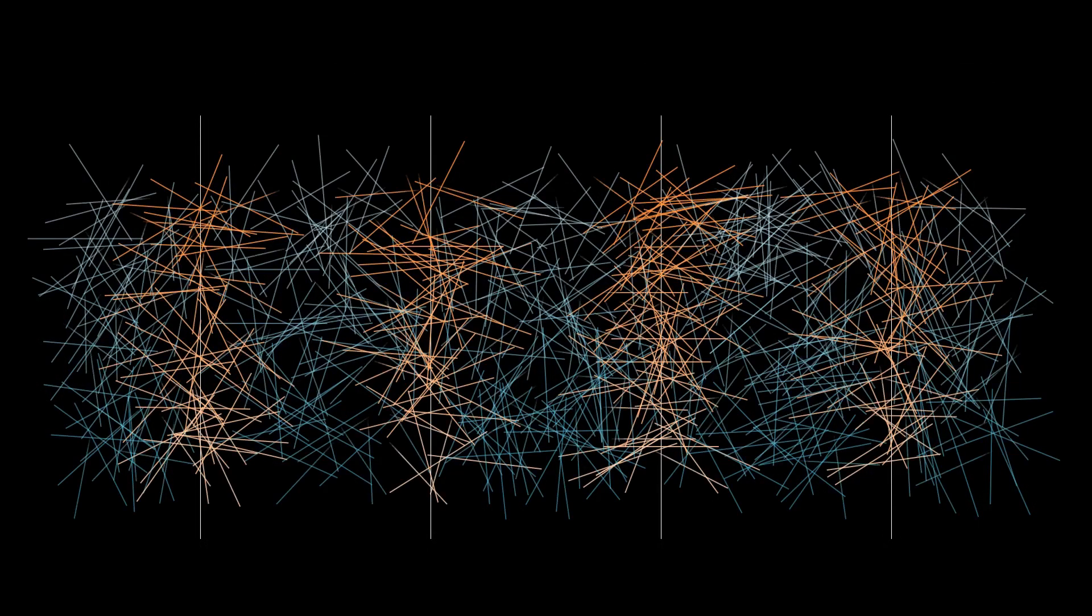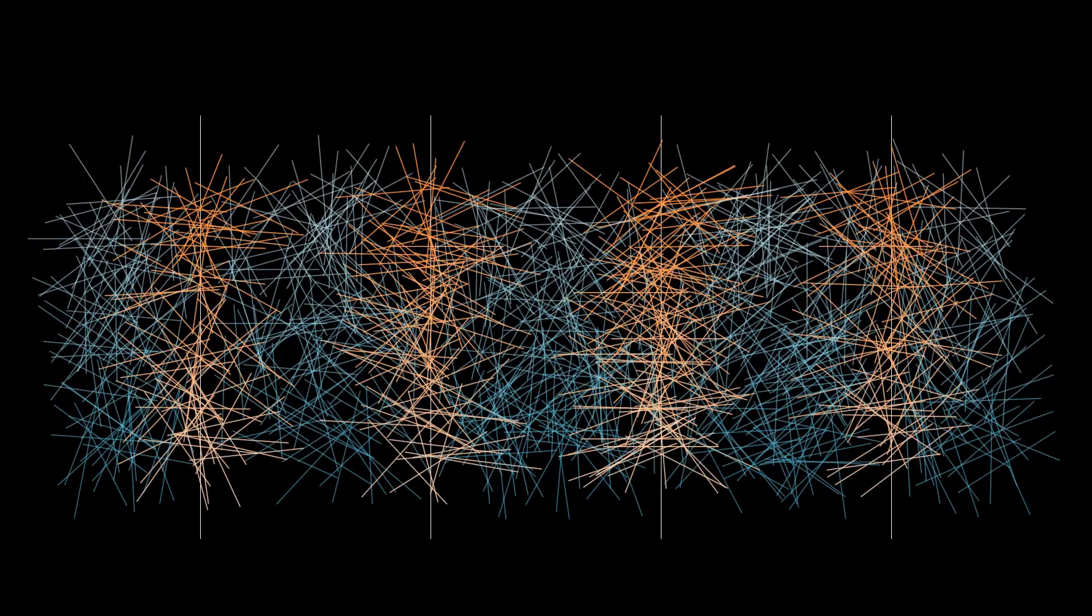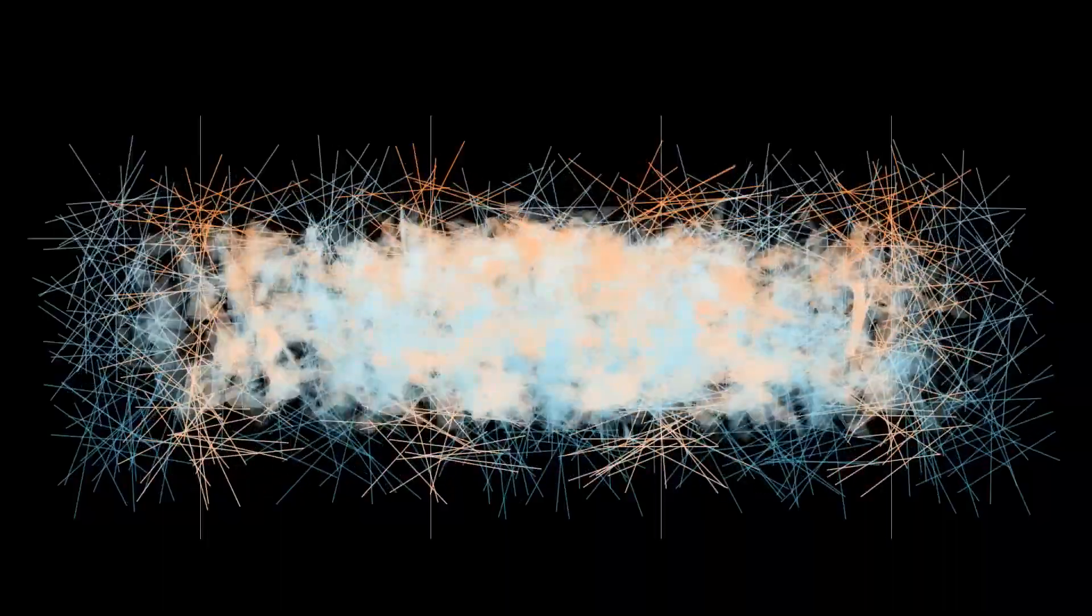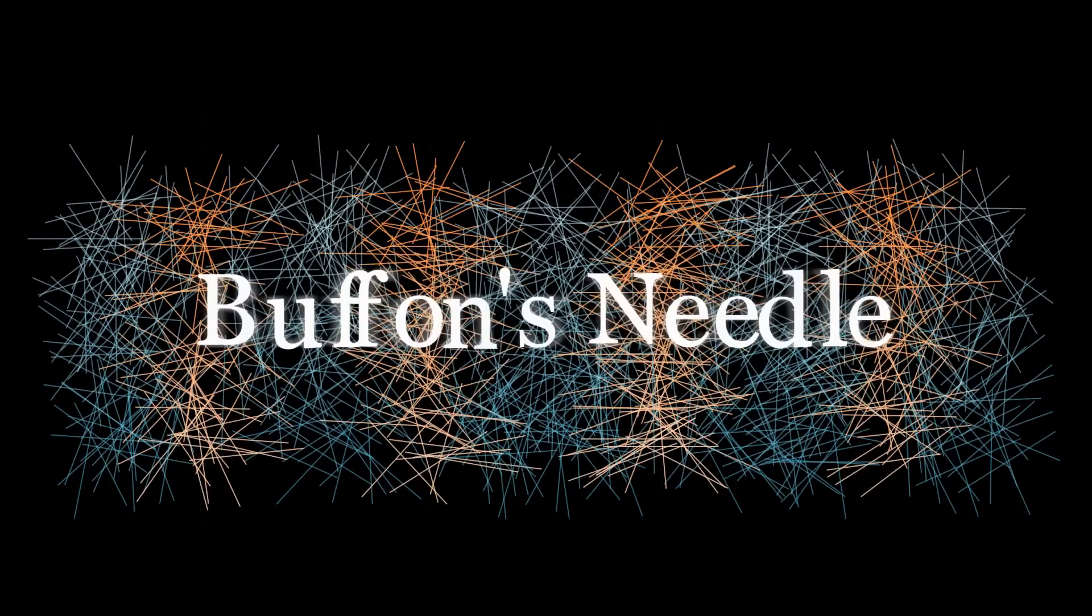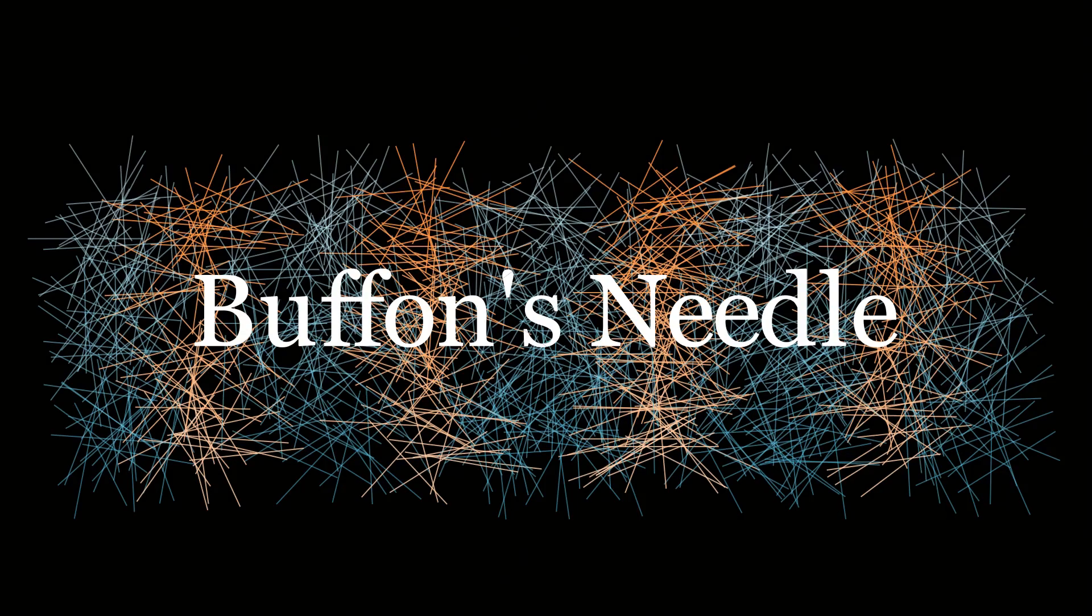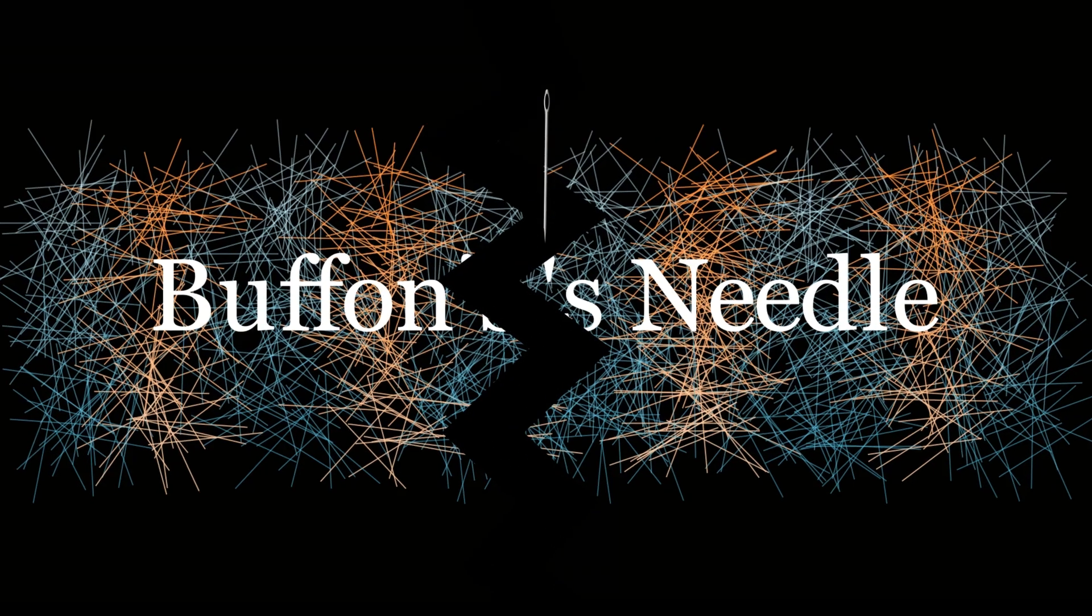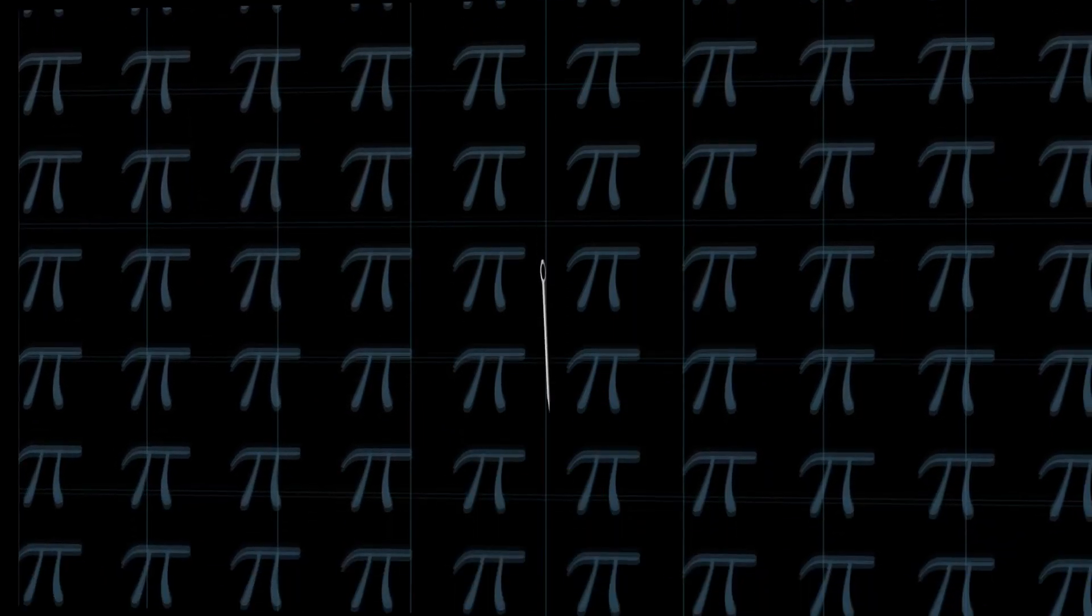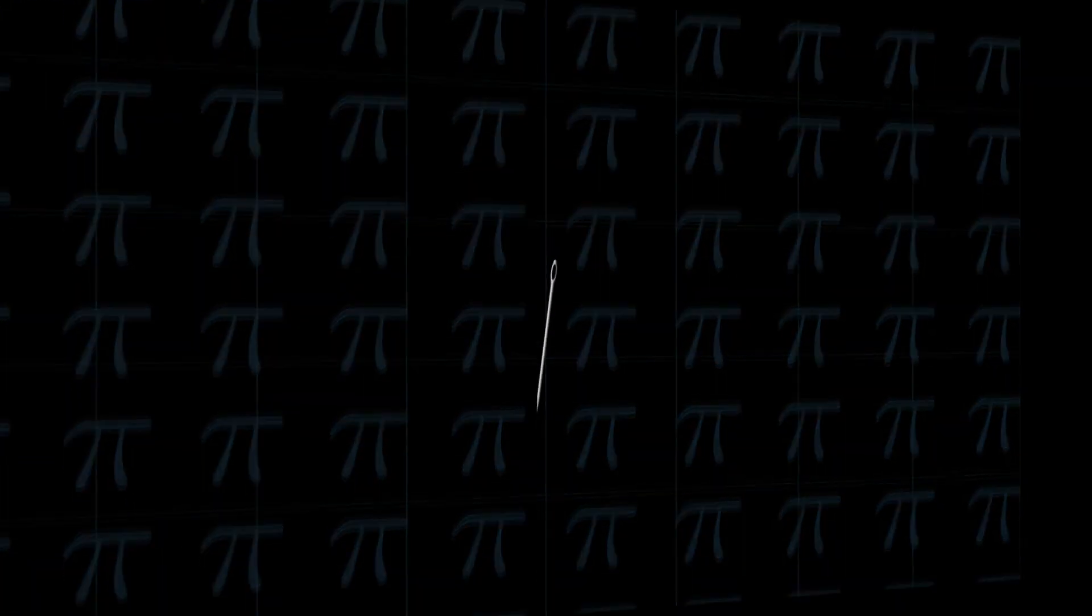This may seem like a coincidence, but it actually is a legitimate way to approximate pi using probability, called Buffon's needle. I find it fascinating that something as random as dropping needles onto the floor can be used to approximate pi. So why does pi show up here?